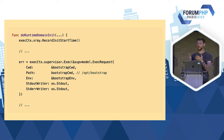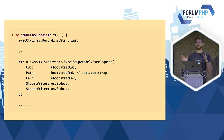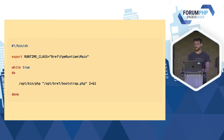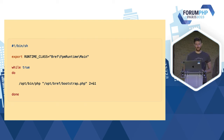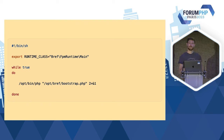Le binaire Go démarre et vient noter le temps de l'initialisation pour le tracing X-Ray, mais surtout il fait un exec sous-processus de /opt/bootstrap. Opt, c'est le dossier dans lequel est montée la runtime, c'est-à-dire Bref. Bootstrap, c'est un fichier qu'on doit créer quand on fait une runtime, et c'est un fichier qu'on peut trouver sur GitHub. Il vient mettre dans une variable d'environnement la classe PHP de Bref qui va tourner, et dans un while true — au cas où PHP crash — vient démarrer PHP et lancer le script bootstrap.php. Même le binaire PHP est dans /opt, c'est un binaire sur le Linux qui tourne dans Amazon Lambda.